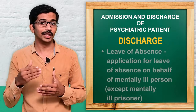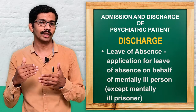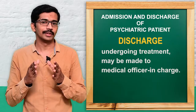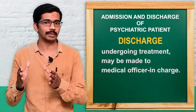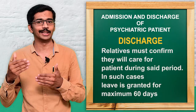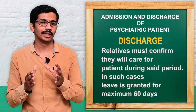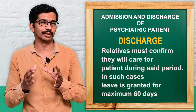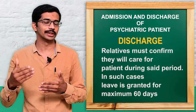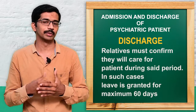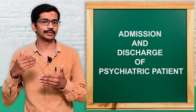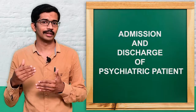There is another concept called leave of absence, which is given only for voluntary patients and not for mentally ill prisoners. If relatives assure they will take care of the patient, a leave like a vacation can be allowed for a maximum of 60 days. The family members must give a bond that they will take care of the patient and no harm will be caused, and with that assurance the patient will be sent home. This is the various admission and discharge procedure of mentally ill patients as followed in India per the Indian Mental Health Act of 1987.